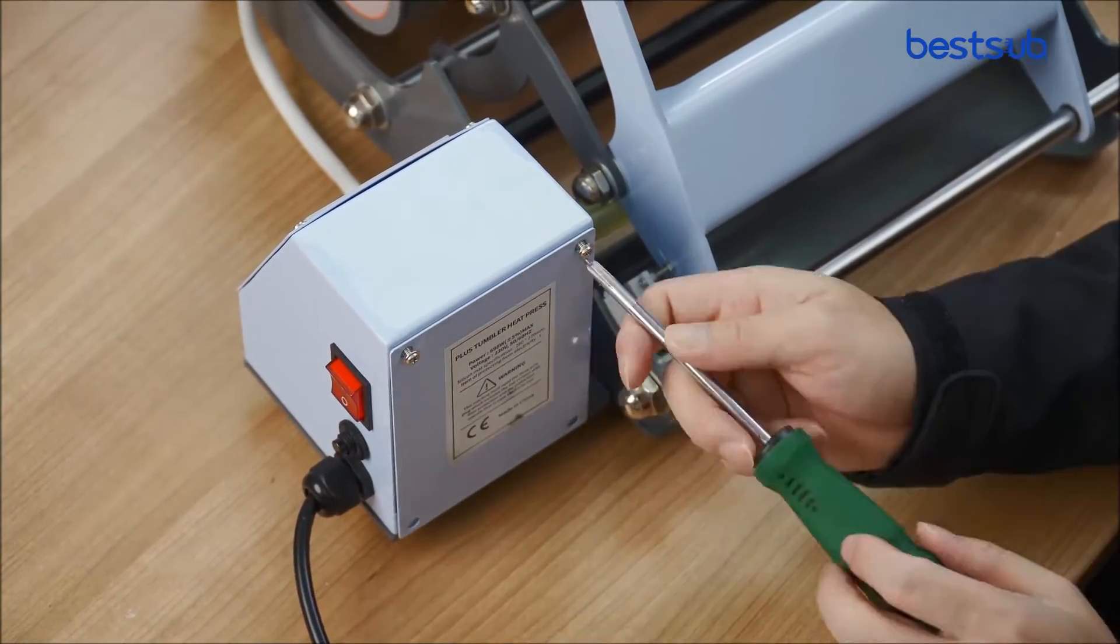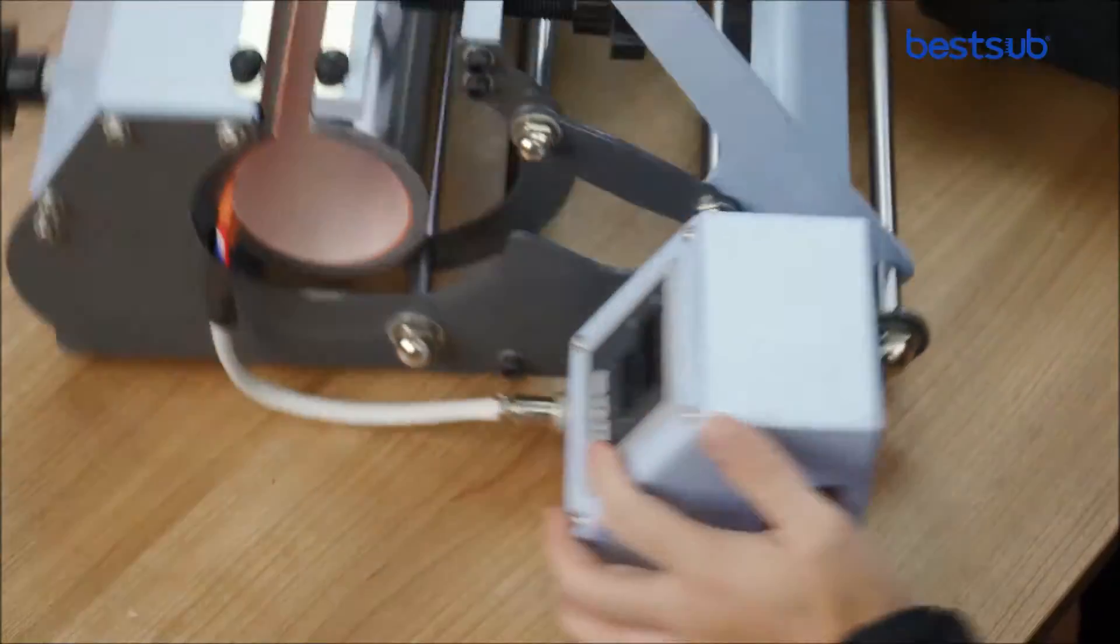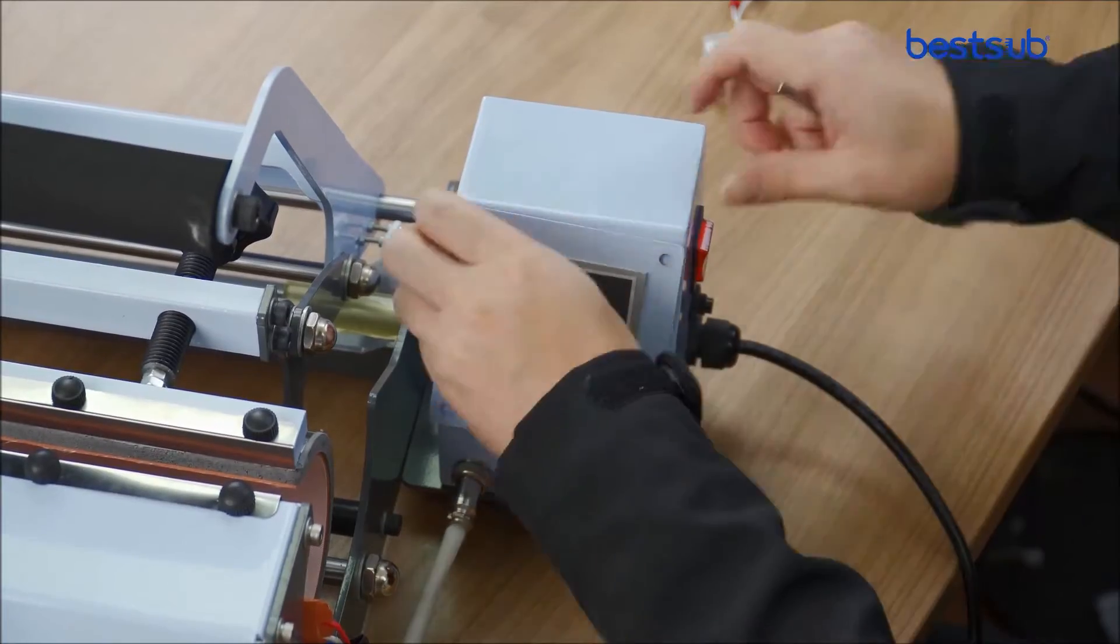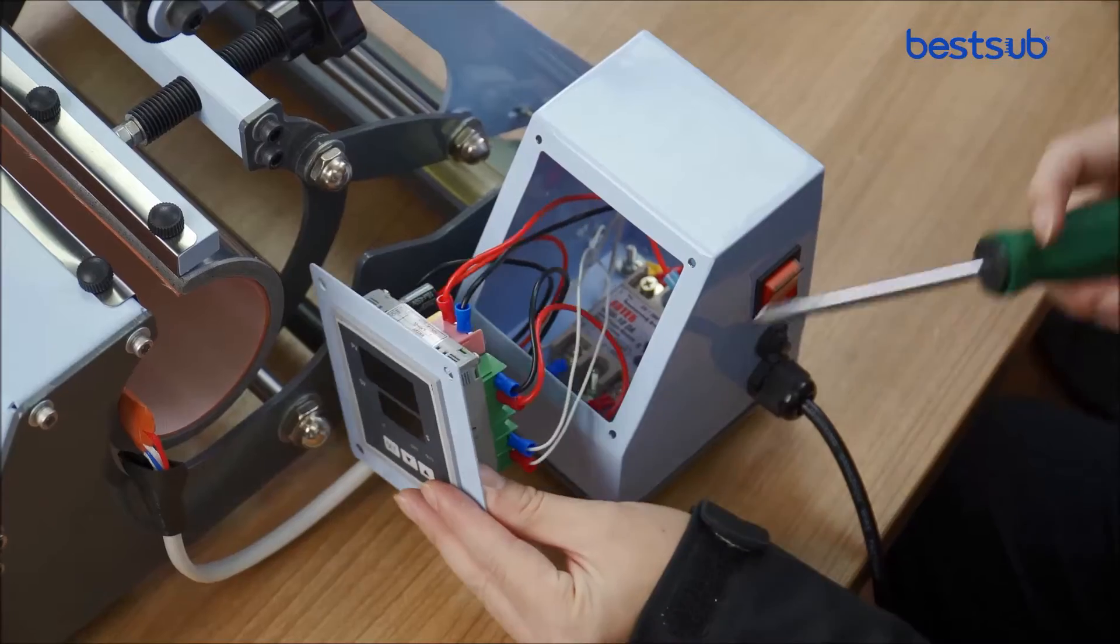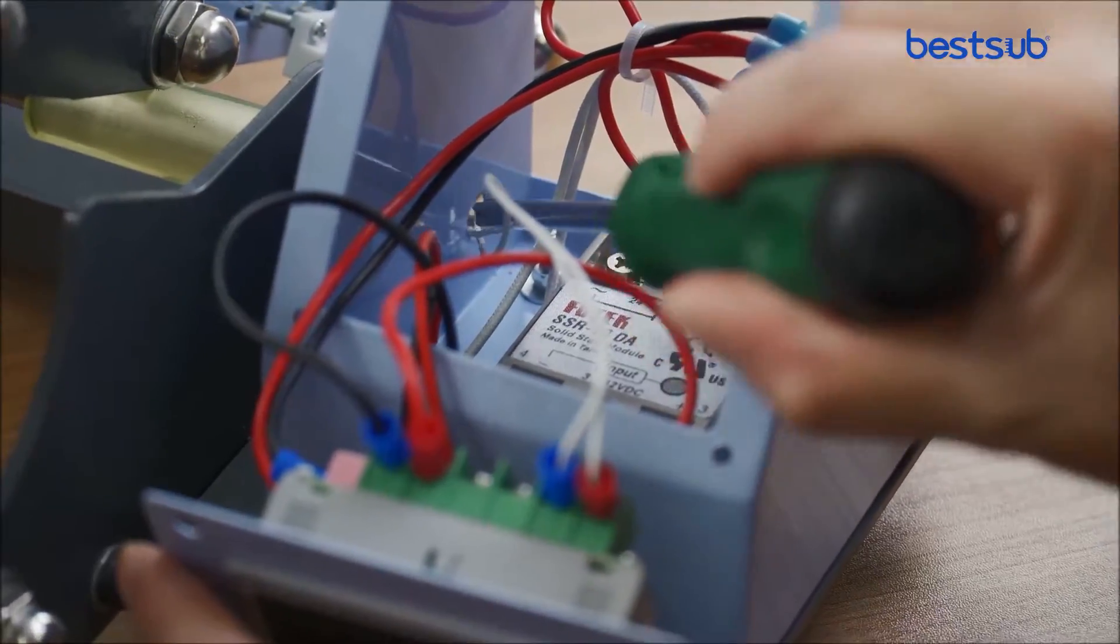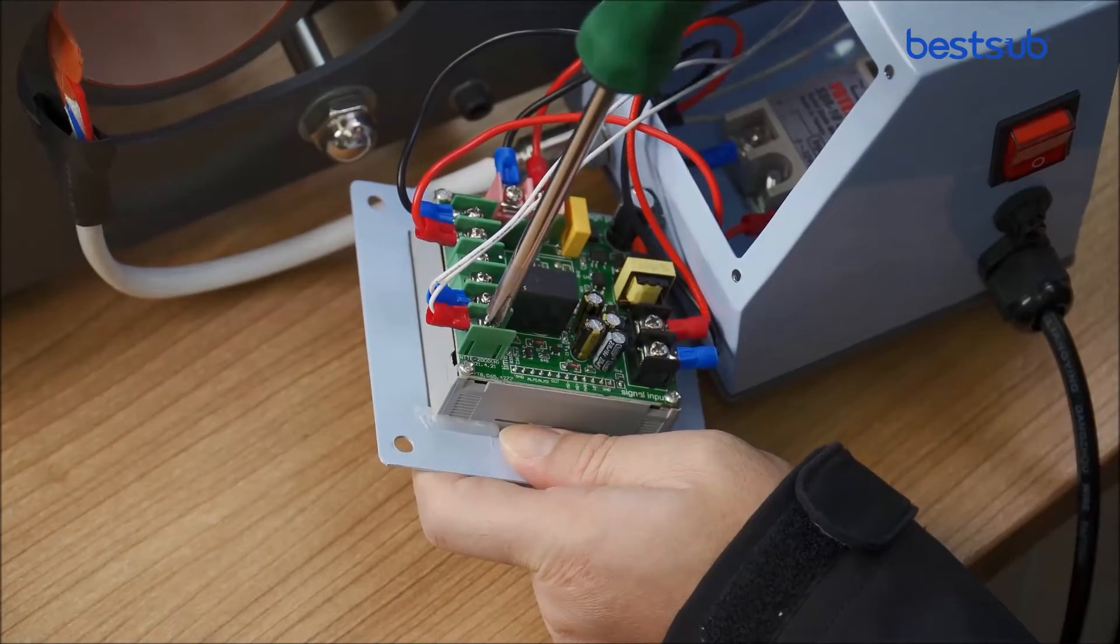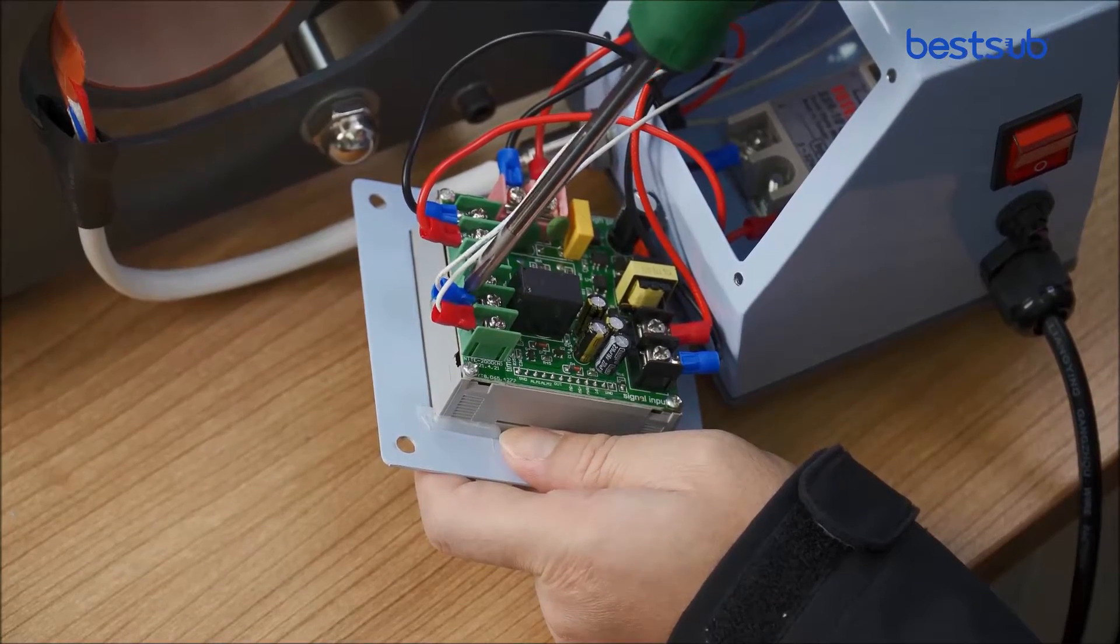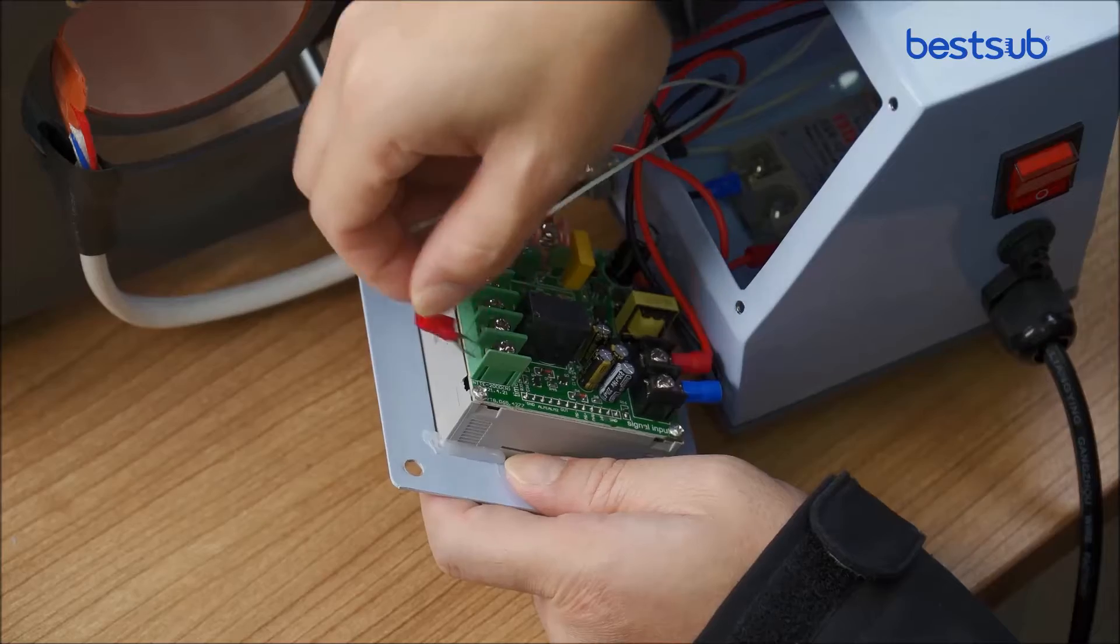First, unscrew both sides of the panel screws. We need to replace the red and blue connection cable that connects to the reed part. Loosen the screws on the red and blue cables, then detach the red and blue cables and the reed part.